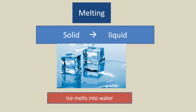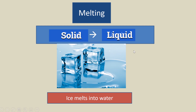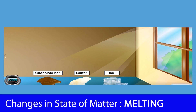What is melting? Melting is a physical process that turns solid into liquid. For example, ice melts into water. Look at these three solids — what happens if they are placed under the hot sun for half an hour?